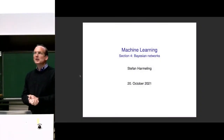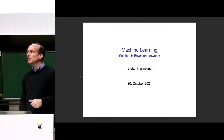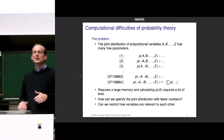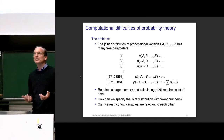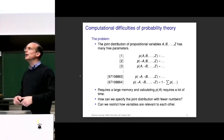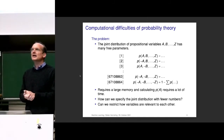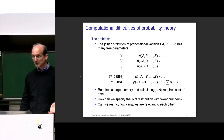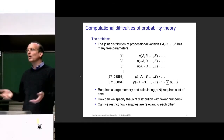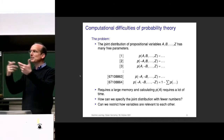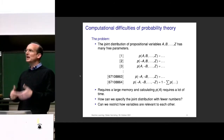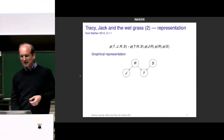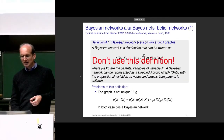We continue with Bayesian networks. Just as a very brief reminder: the motivation was that probability distributions of already binary variables can get very memory hungry — they need lots of numbers to store. However, we know from our world knowledge that not everything depends on everything, so there might be some graphical structure behind, and this graphical structure is called a Bayesian network.